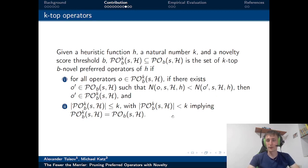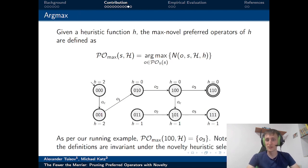Likewise, we can define the k-top novel operators, the definition you can see here on the slide. And lastly, we can define the argmax novel operators that are basically all the operators that have the maximal novelty, which in the case of our running example is O3 only. I remind you, the way that we use all these definitions is by defining a new set of preferred operators which is equal or smaller to the original one, because we only prune operators, we do not add any, and we use it as the original preferred operator set.